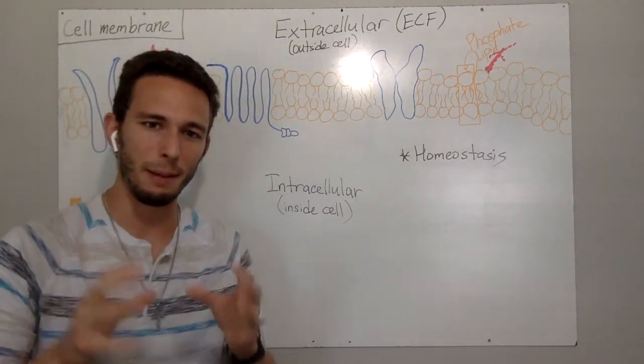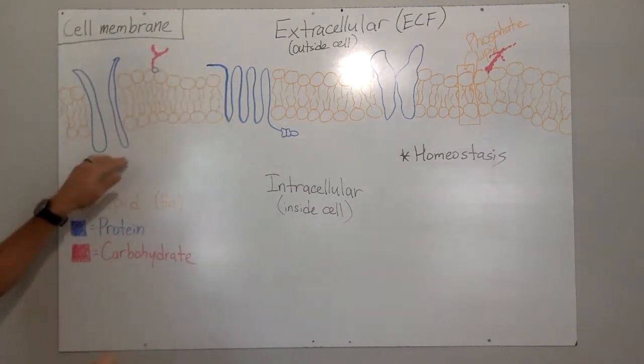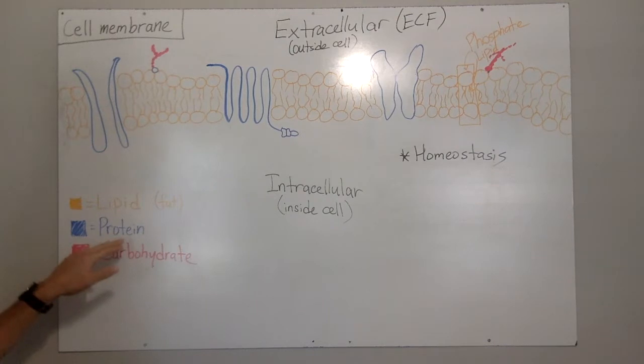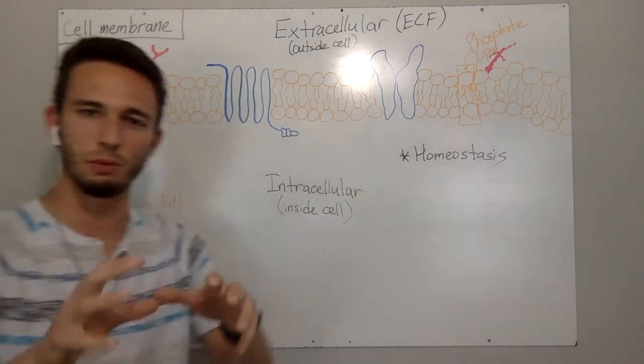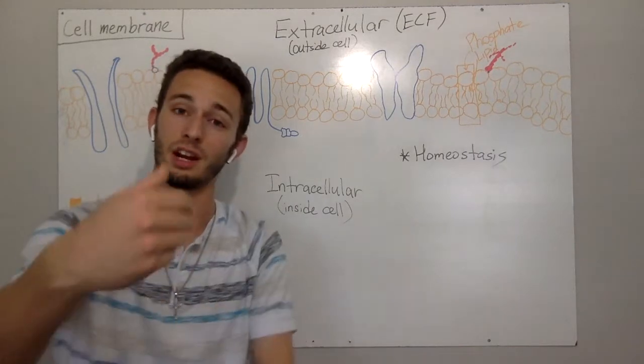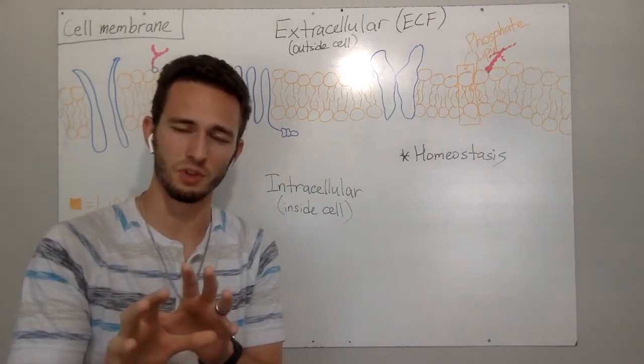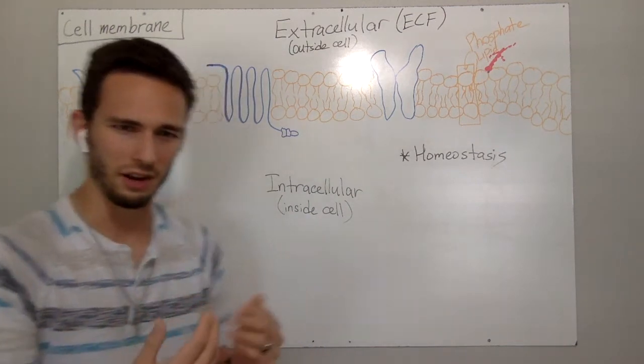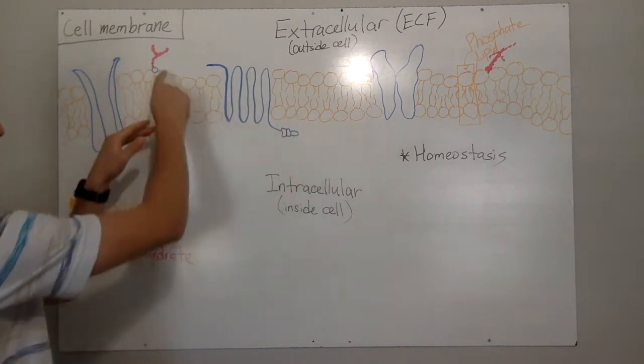The amazing thing about the cell membrane is that there's multiple components. The blue represent proteins, and they all have different shapes, different sizes, different configurations that will do different things depending on their structure. We're going to be going through the structure and functions of those proteins in a later episode, but I just wanted to point out a few of them right now.